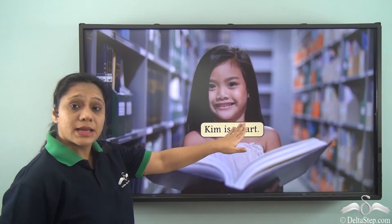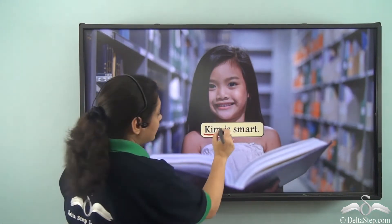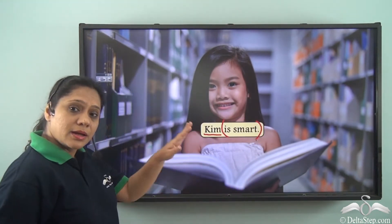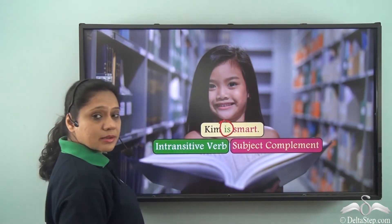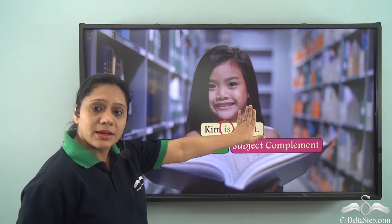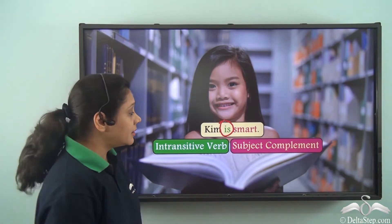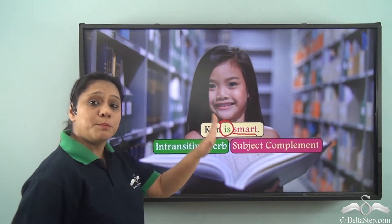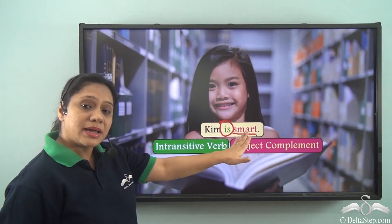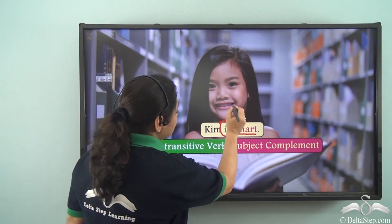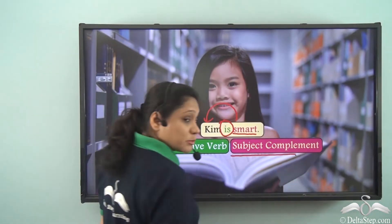Consider the sentence: Kim is smart. In this sentence Kim is the subject and 'is smart' is the predicate. This predicate has the intransitive verb 'is'. Now if I just say 'Kim is', does our sentence make sense? No, our predicate is incomplete. Hence the word 'smart' completes the predicate and makes a meaningful sentence. So this word is a complement. This complement tells us more about the subject Kim, hence it is a subject complement.